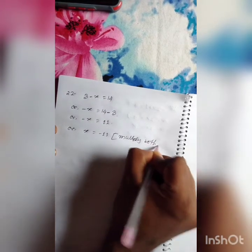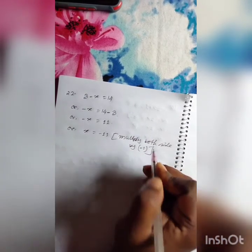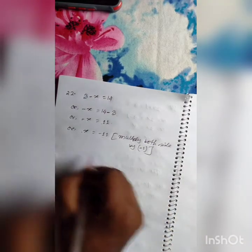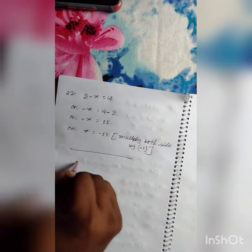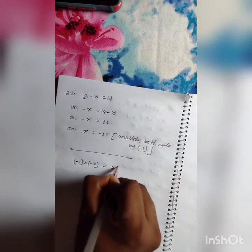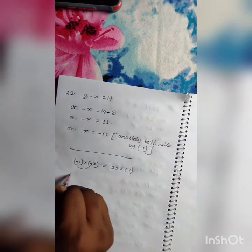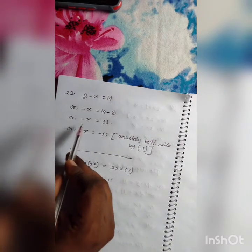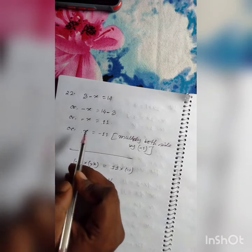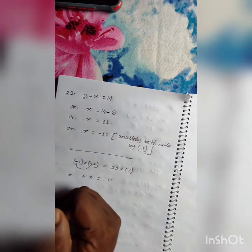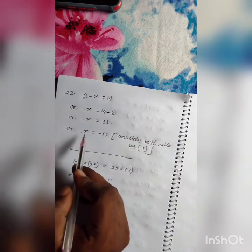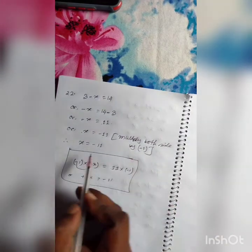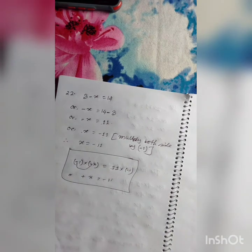We multiply both sides by minus 1. When we multiply both sides by minus 1, the minus sign on X becomes plus and we get X equals minus 11. Multiplying both sides by minus 1: minus 1 times minus X gives plus X, and minus 1 times 11 gives minus 11. So we find our required solution: X equals minus 11.